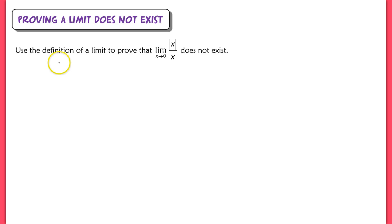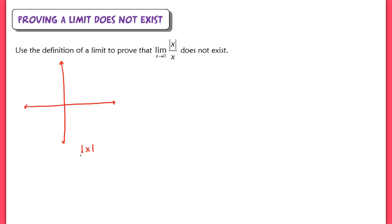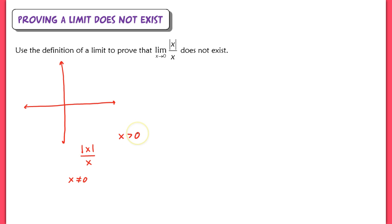Before we begin the proof, it's helpful to graph this function. The absolute value creates a piecewise function because it's defined differently depending on whether x is positive or negative. We should also note that the function is not defined when x equals 0, since that's not in the domain — we'd be dividing by 0. When x is positive, the absolute value does nothing algebraically, leaving x over x.